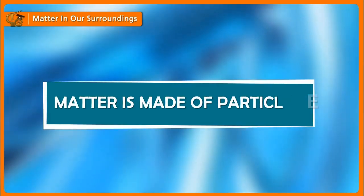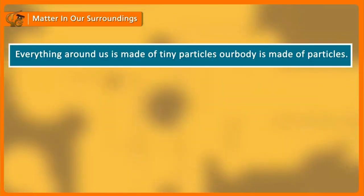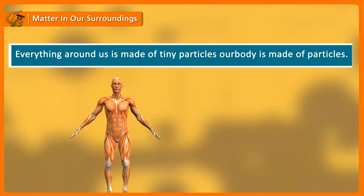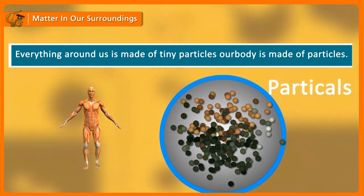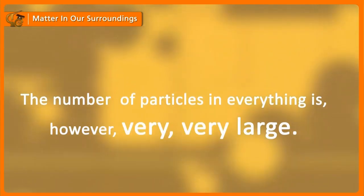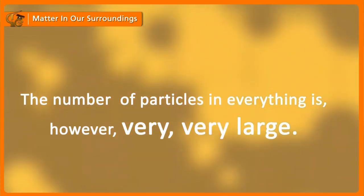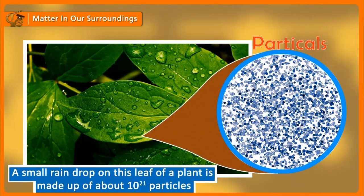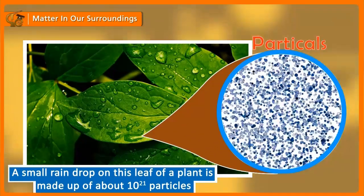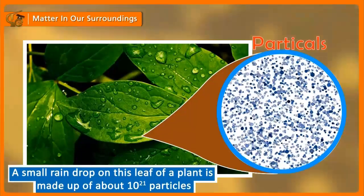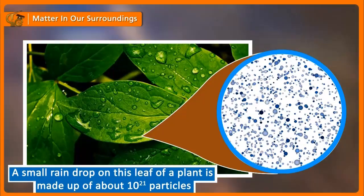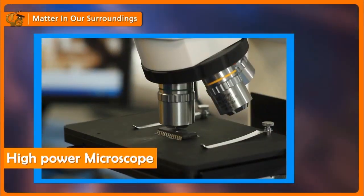Matter is made of particles. Everything around us is made of tiny particles. A body is made of particles in matter. The number of particles in everything is however very very large. For example, a small raindrop contains about 10 to the power 21 particles of water in it. The particles which make up matter are so small that we cannot see them even with a high-power microscope.